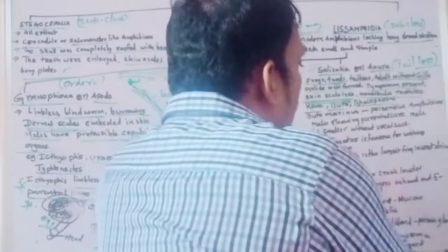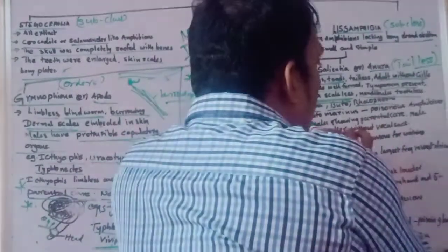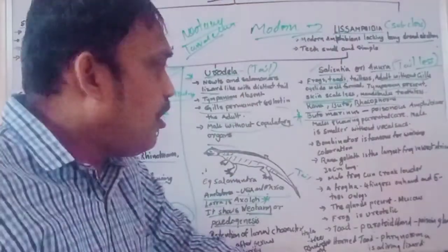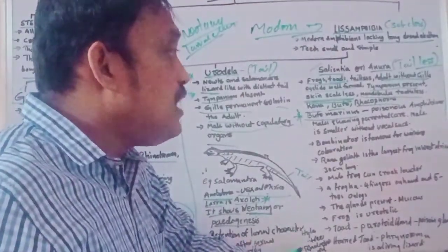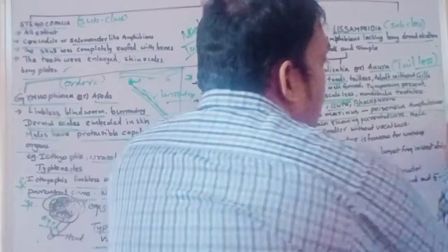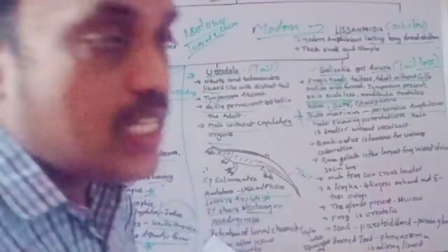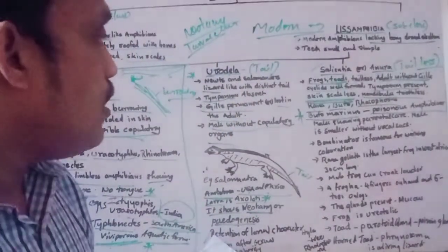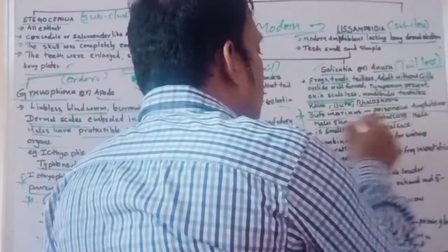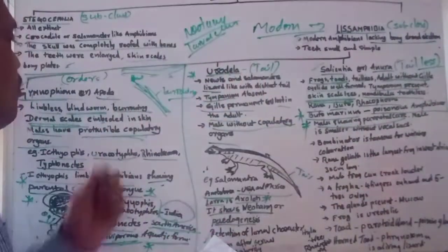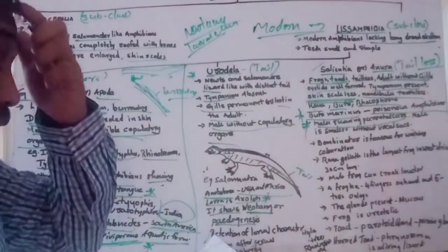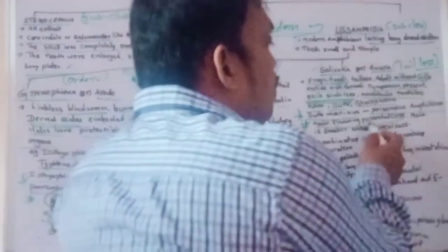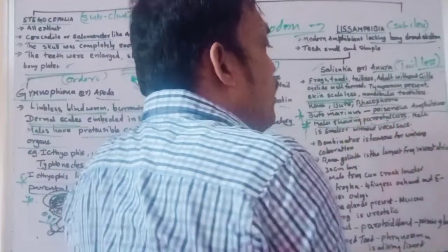Rana Goliath is the largest frog, found in West Africa, approximately 30 centimeters long. Generally, in frogs, the male croaks louder than the female, especially during the rainy season at the time of copulation, making sound with vocal cords.